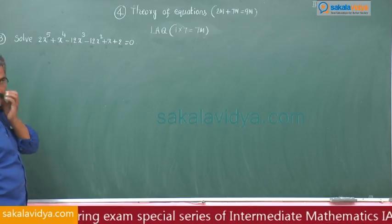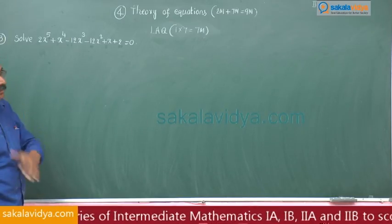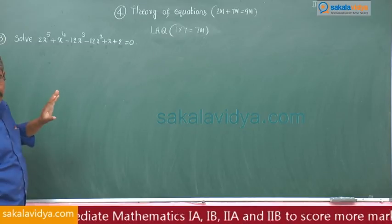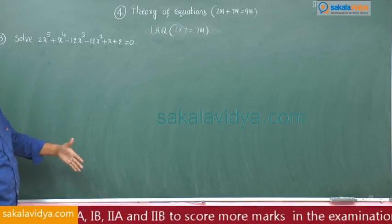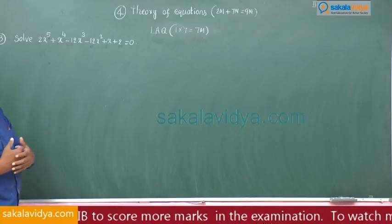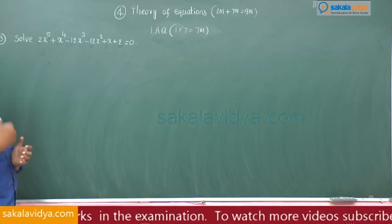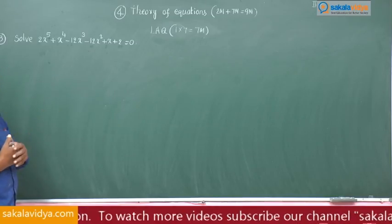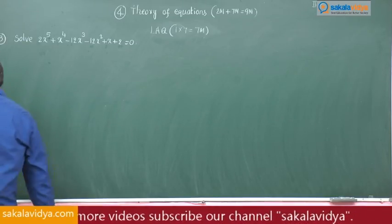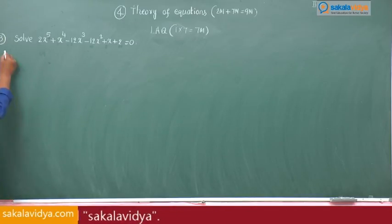Whenever it is class 2 of odd degree, minus 1 will be the root of this equation. After that we have to reduce it, and the reduced equation will be a standard reciprocal equation — how to solve that we have already discussed. Let us write the solution.